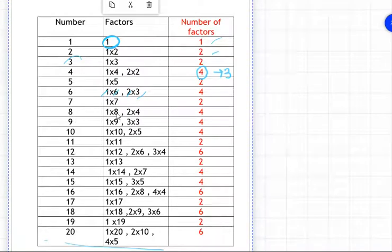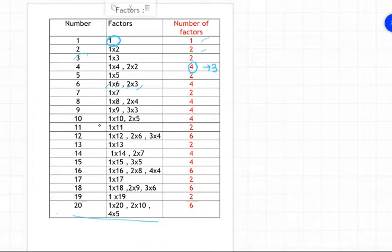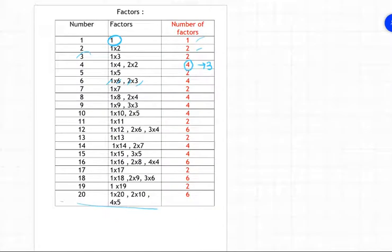Nine has one, two, three - three factors. We just learned that one, nine, and three's table consist of number nine. In these three tables, the number nine appears. So nine has how many factors? Nine has three factors.